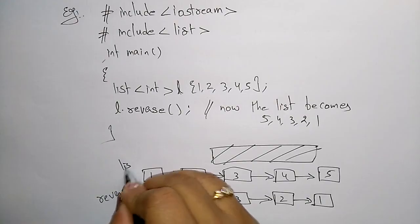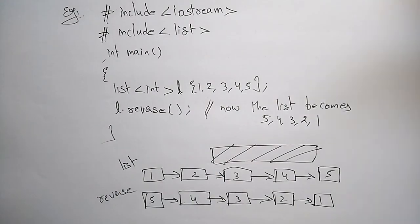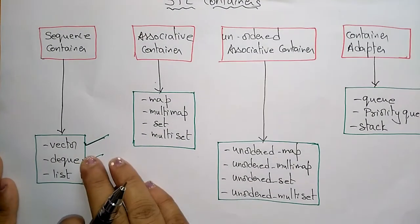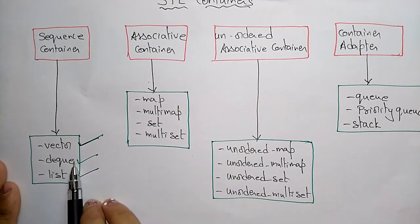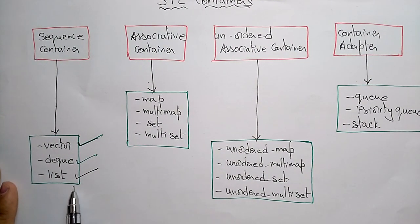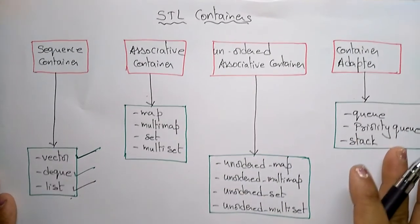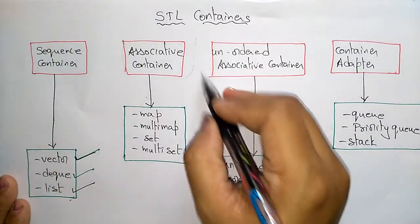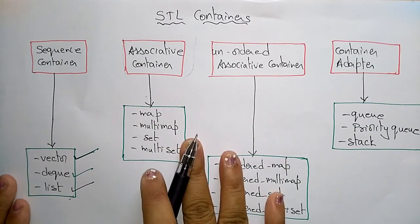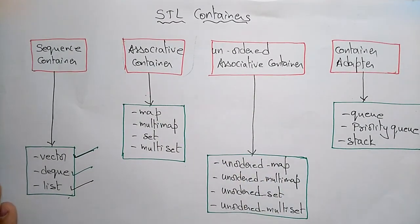So that covers the three sequence container examples: vector, deque, and list. In the next video, I will explain about the associative and unordered associative containers. Thank you.